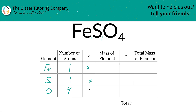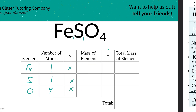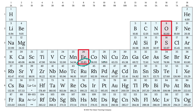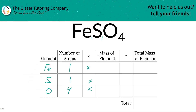We're going to take those number of atoms and multiply by the mass of each element. These masses are found on the periodic table. Iron is 55.85, oxygen is 16, and sulfur is about 32.07. So let's write them in: 55.85 for iron, 32.07 for sulfur, and 16 for oxygen.